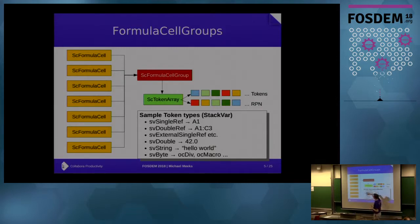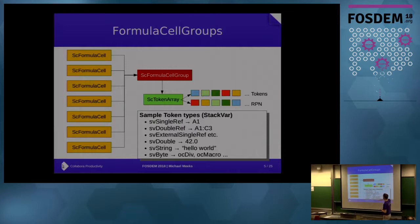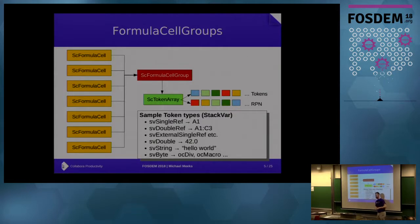Inside those formula cells you have a whole run of formula cells, but we try to group information about them. There's a token array that basically represents your formula - for example, equals SUM(1, 2, 3). There are two representations: a token array in normal order like SUM 1 2 3, and the reverse Polish equivalent: 1 2 3 SUM. The nice thing about reverse Polish is you don't need complicated parsing - you execute by pushing and pulling to a simple stack.